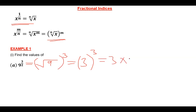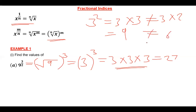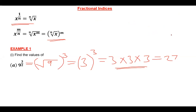A common mistake people make is writing three to the power two as three times two, giving six — but that is wrong. Three raised to the power two means three times three, which gives nine, not six. So three raised to the power three is three times three times three, which gives 27. The answer is 27.